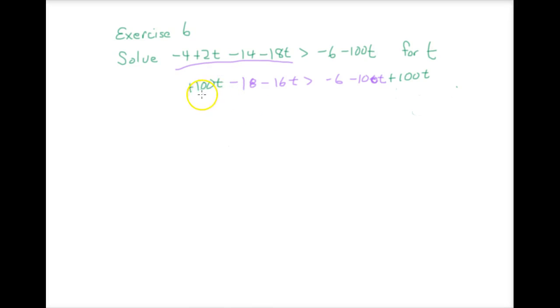And we have 100 take away 16, 84t minus 18 is, and here's our zero pair, zero, greater than negative 6. This one can be lightened up by adding 18, zero pairs here, plus 18. 84t is going to be greater than 12 and now we can finish divide by 84.